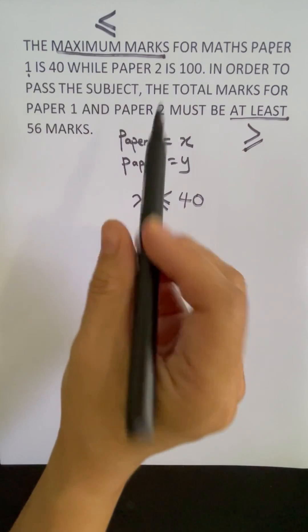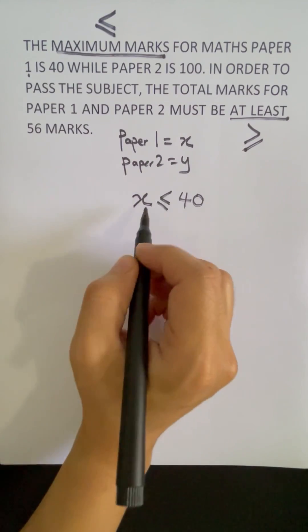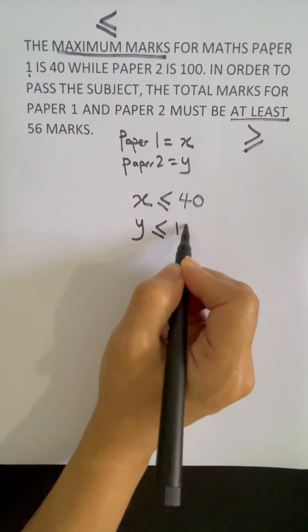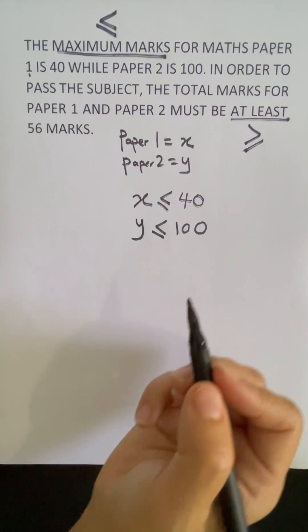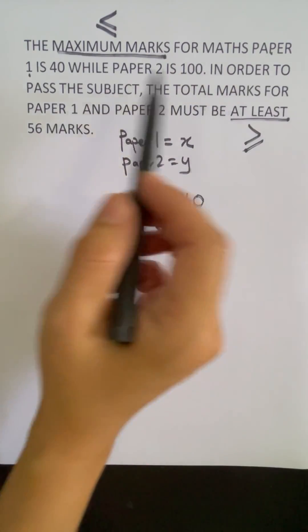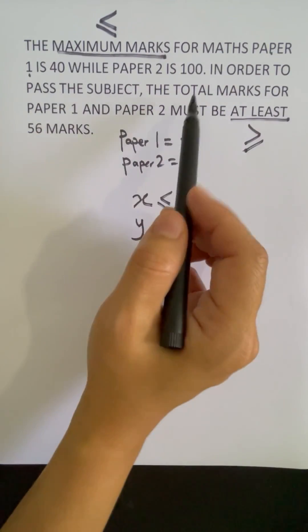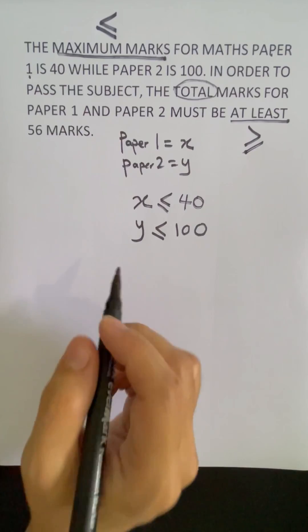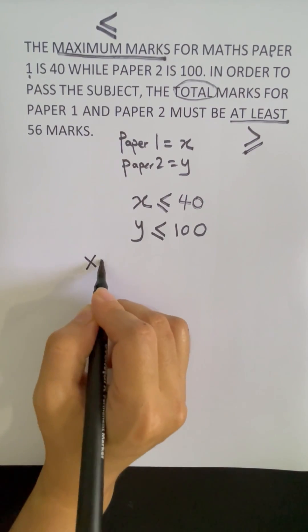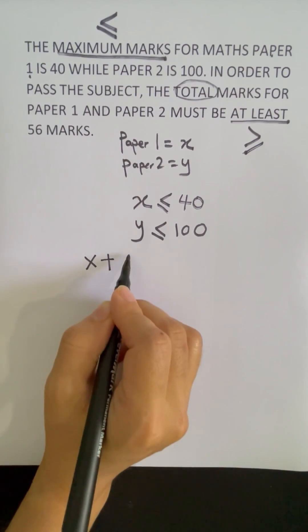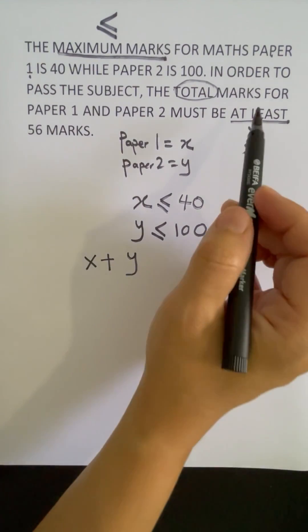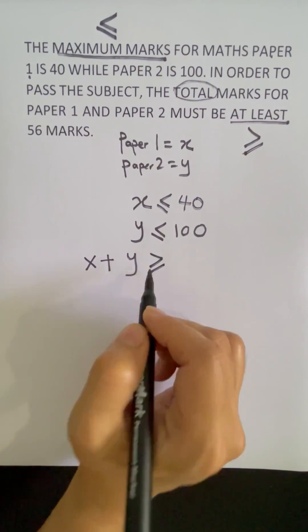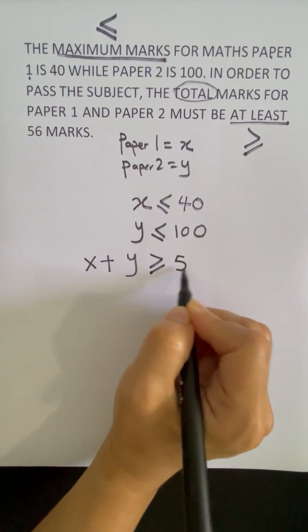For paper 2, the maximum marks is 100, so we write Y less than or equals to 100. Next, in order to pass the subject, the total marks for paper 1 and paper 2 — the word 'total' means we need to add them — so X plus Y, and 'at least' means greater than or equals to 56 marks.